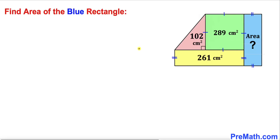Welcome to pre-math. In this video we have a compound shape that consists of a green square, a red right triangle, a yellow rectangle, and a blue rectangle. The areas for the square, the right triangle, and the yellow rectangle have been given to us, and now we are going to find the area of this blue rectangle.